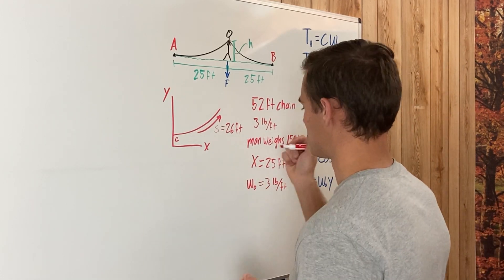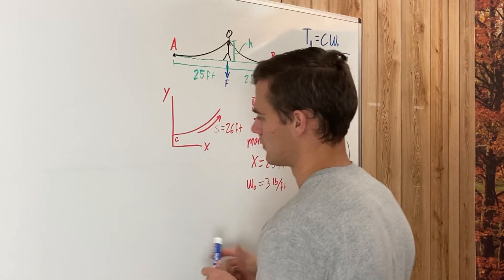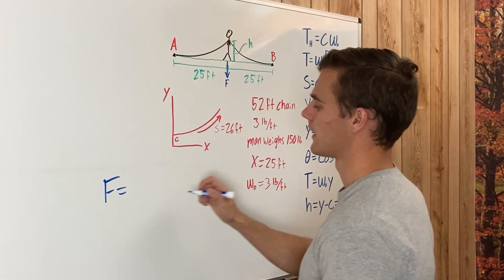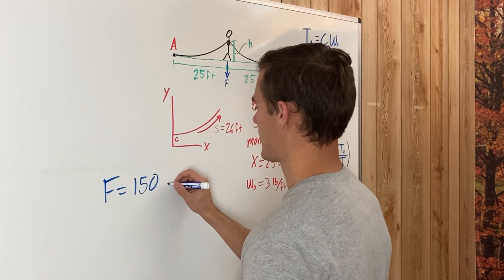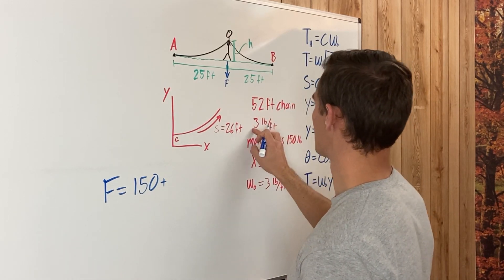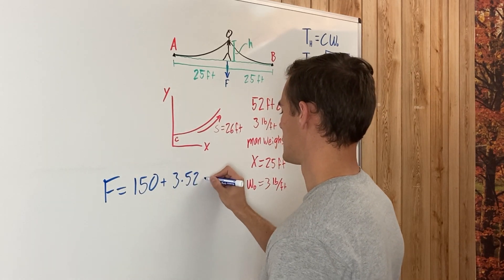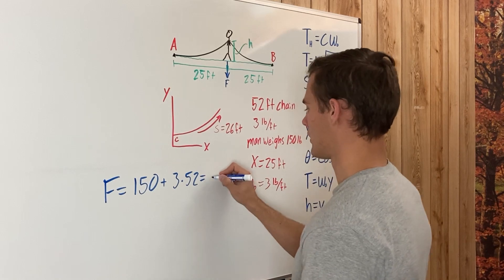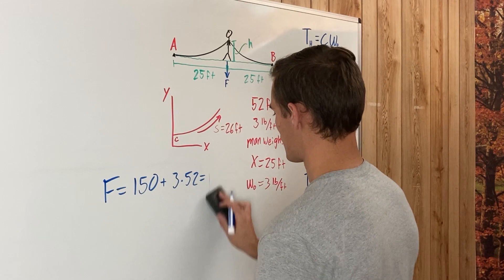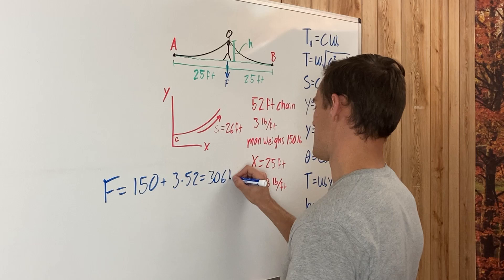The weight of the chain is just going to be its length times by its weight per unit length. So we have that our force F equals the weight of the man, which is 150 pounds, plus the weight of the chain, which is 52 feet times by 3 pounds per foot. So 3 times by 52, and that gives you a total of 306 pounds.